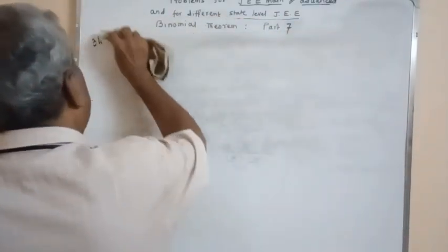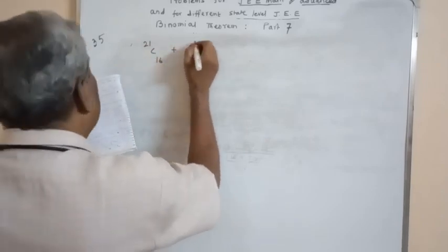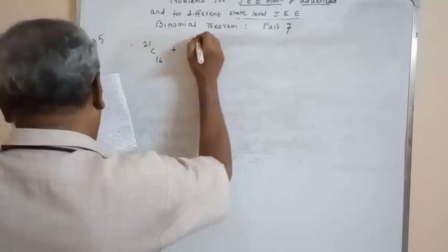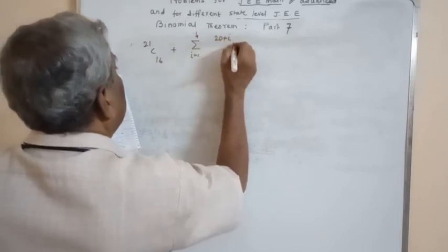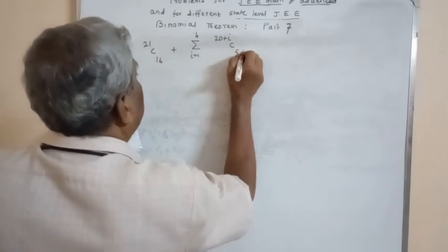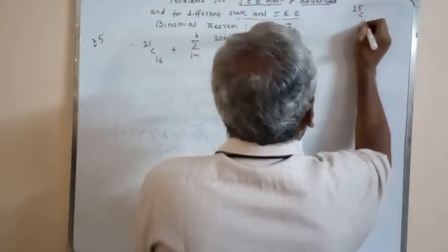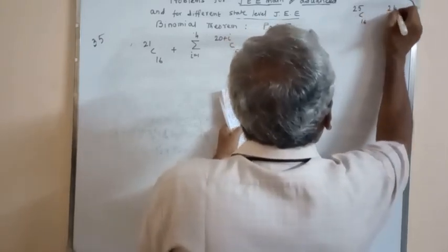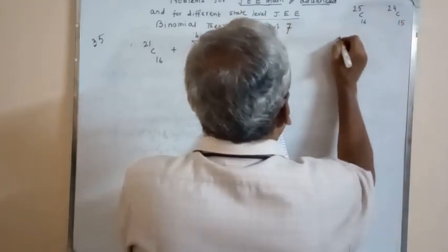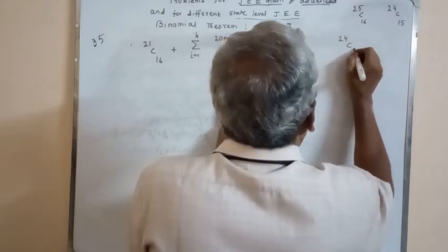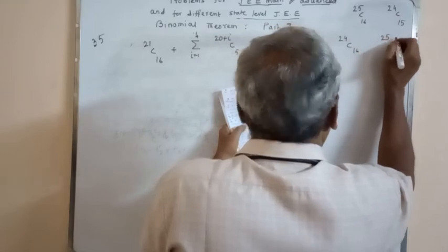Next, problem number 35. Find the sum: 21C16 + Σ(i=1 to 4) of (20+i)C(5+i). Options: 25C16, 24C15, 24C16, and 25C9.